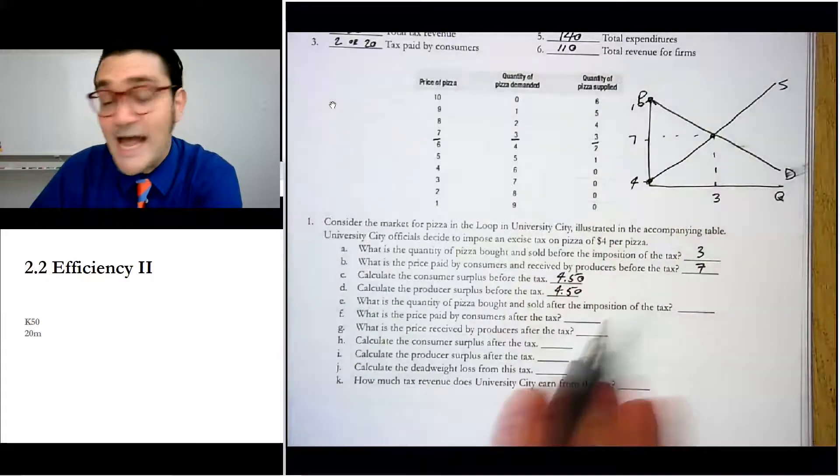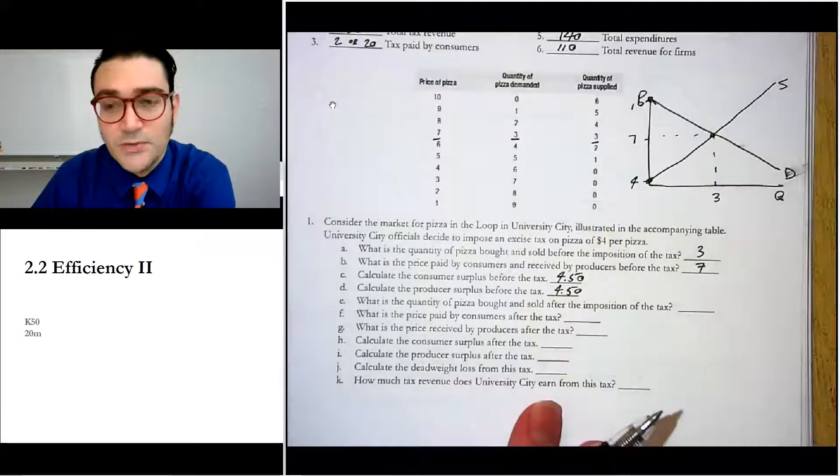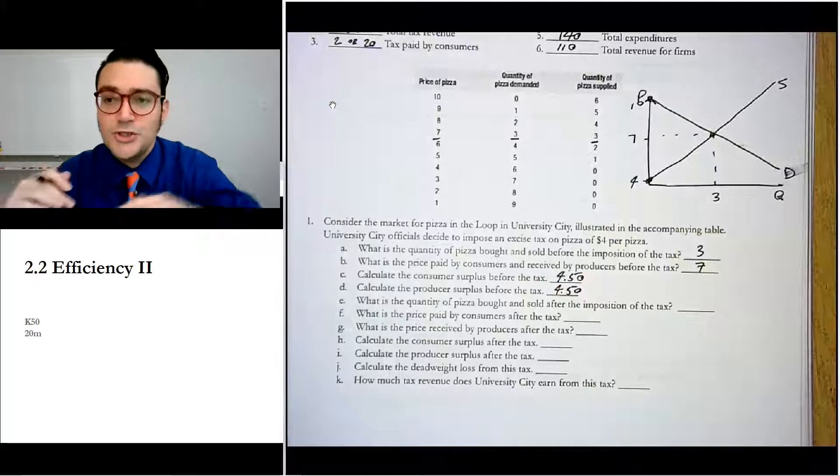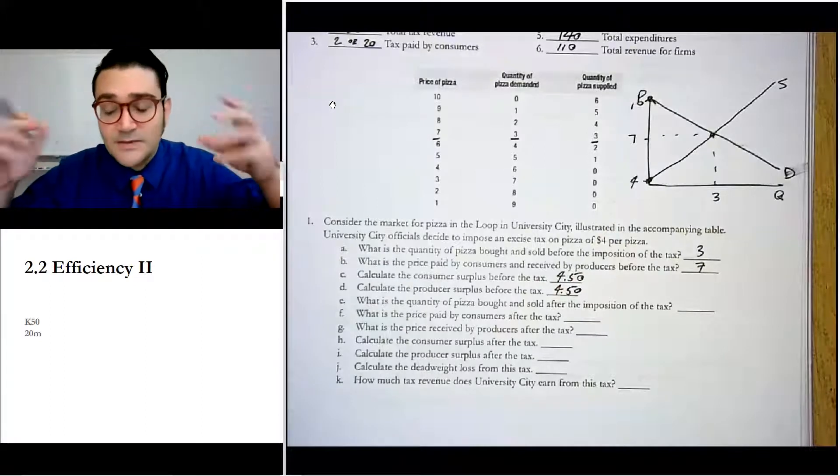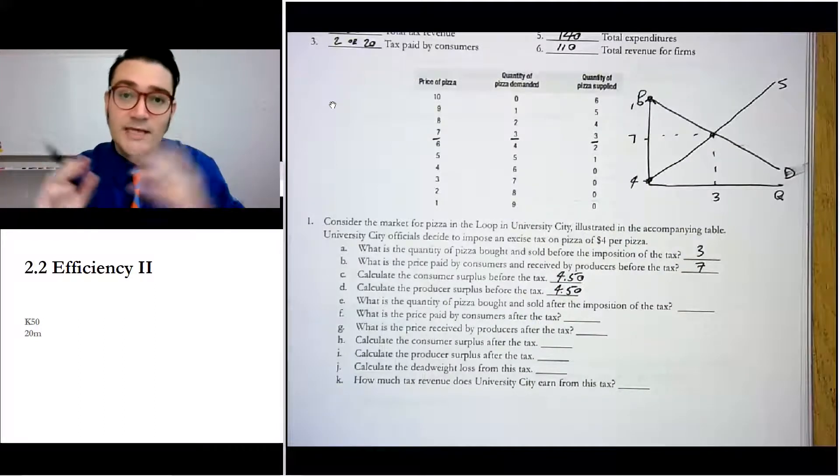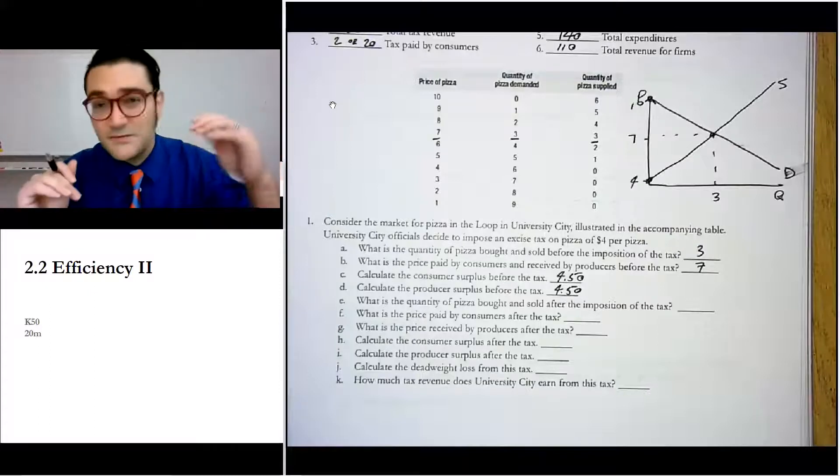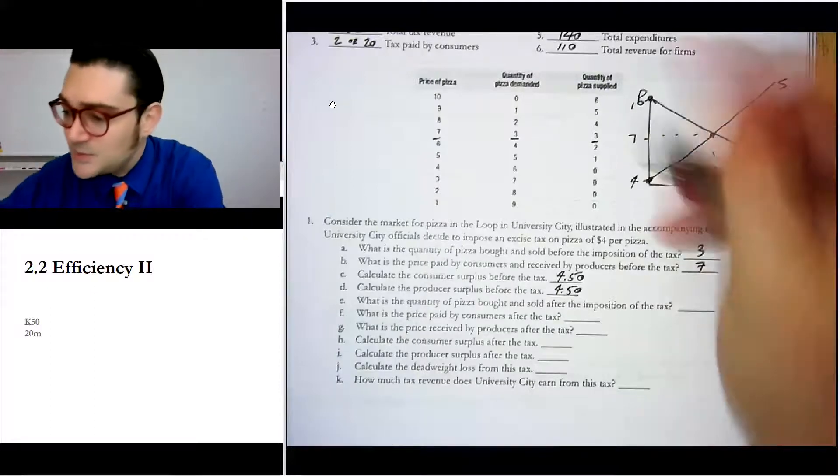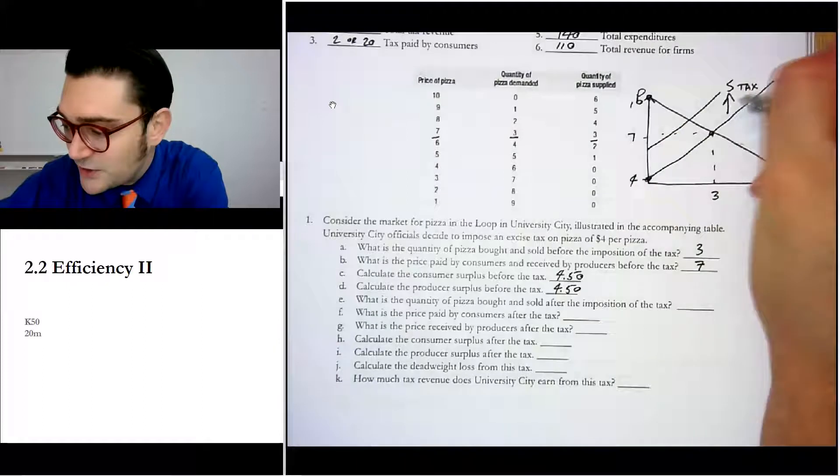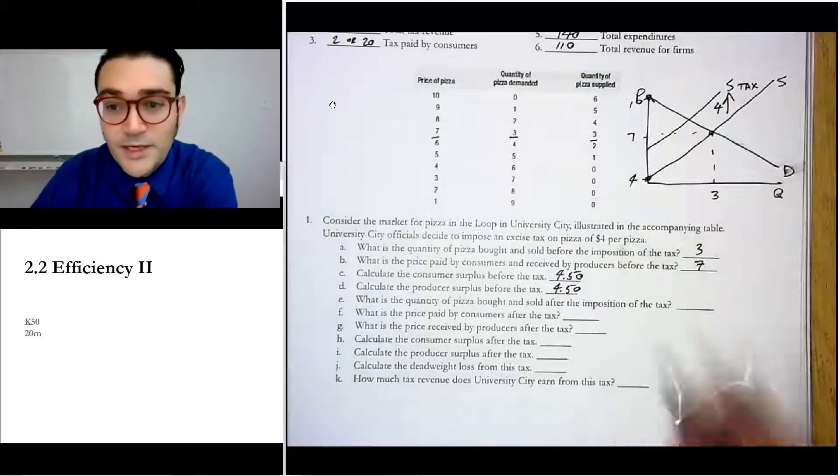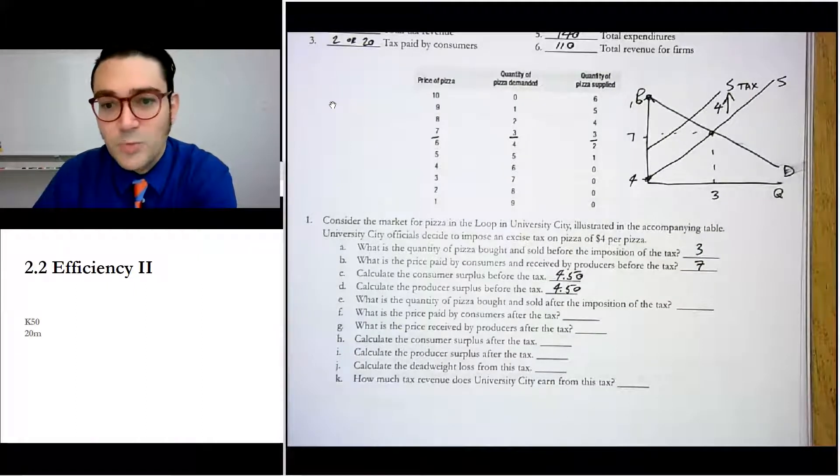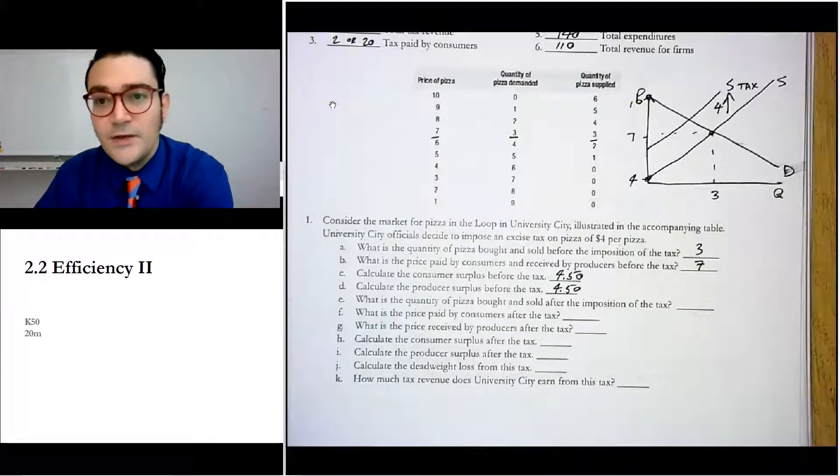What's the quantity of pizza bought and sold after the tax? Now, this is sometimes where students really start to struggle. Remember that a tax, an excise tax, is just adding additional per unit costs, which shifts that supply curve vertically up by the amount of the tax. When we learned about shifting supply and demand, we said that a tax shifts supply to the left because it's a decrease. Well, left and vertically up are basically the same thing. So we know that this curve is going to shift up somehow. It's going to be S tax. And the vertical shift here is going to be in the amount of four. How do we know that? It says four right here.